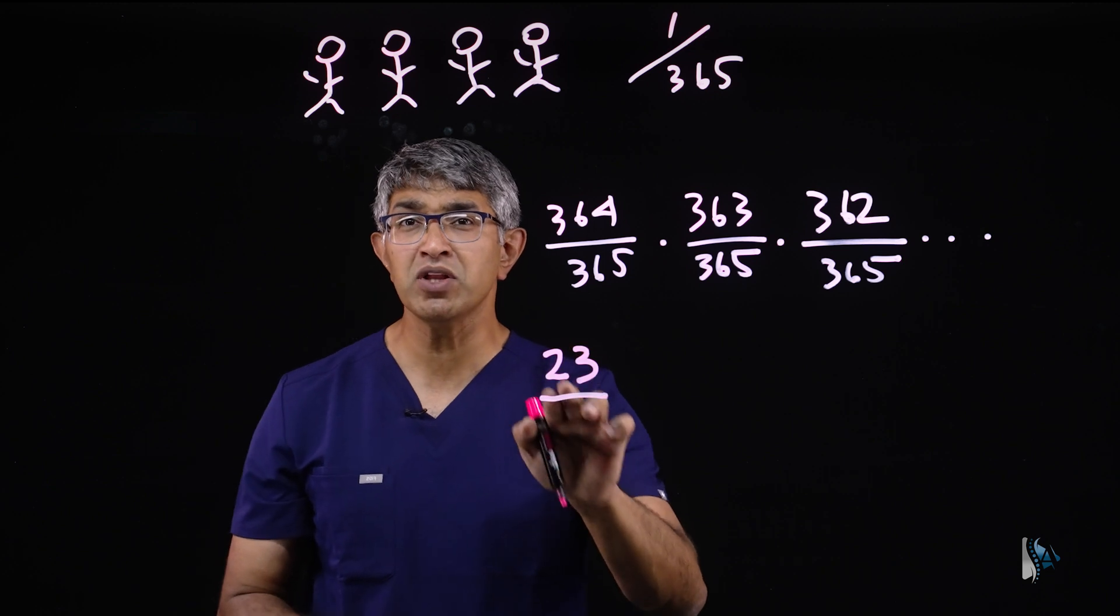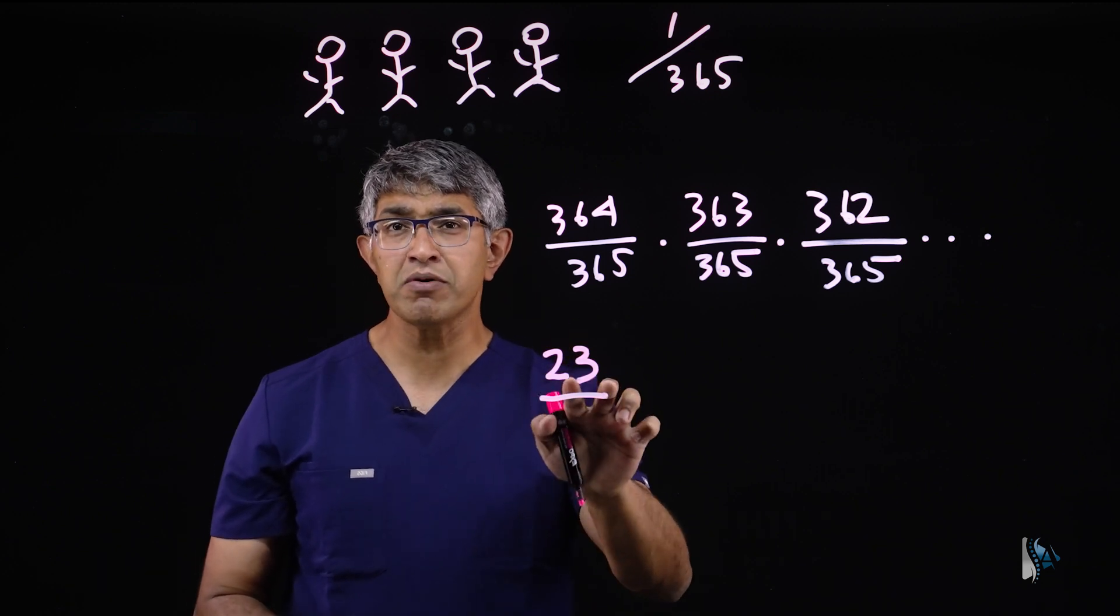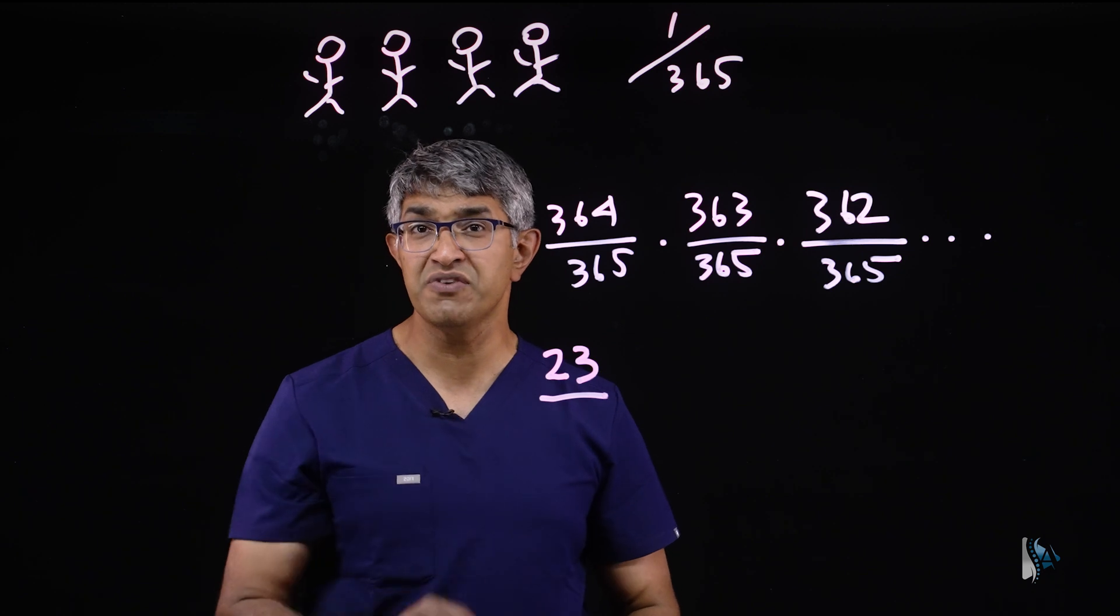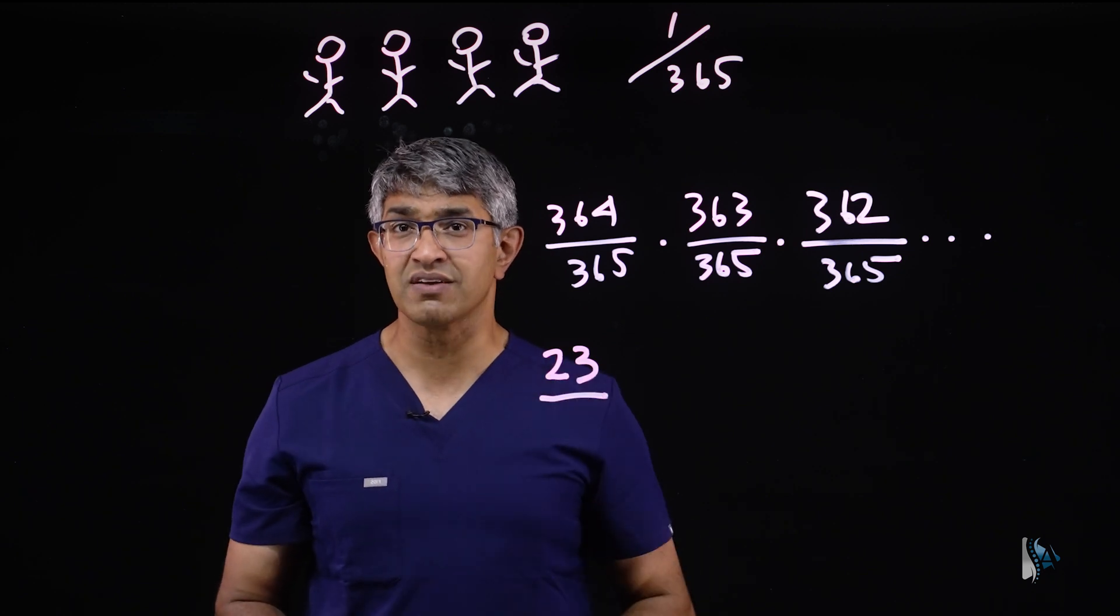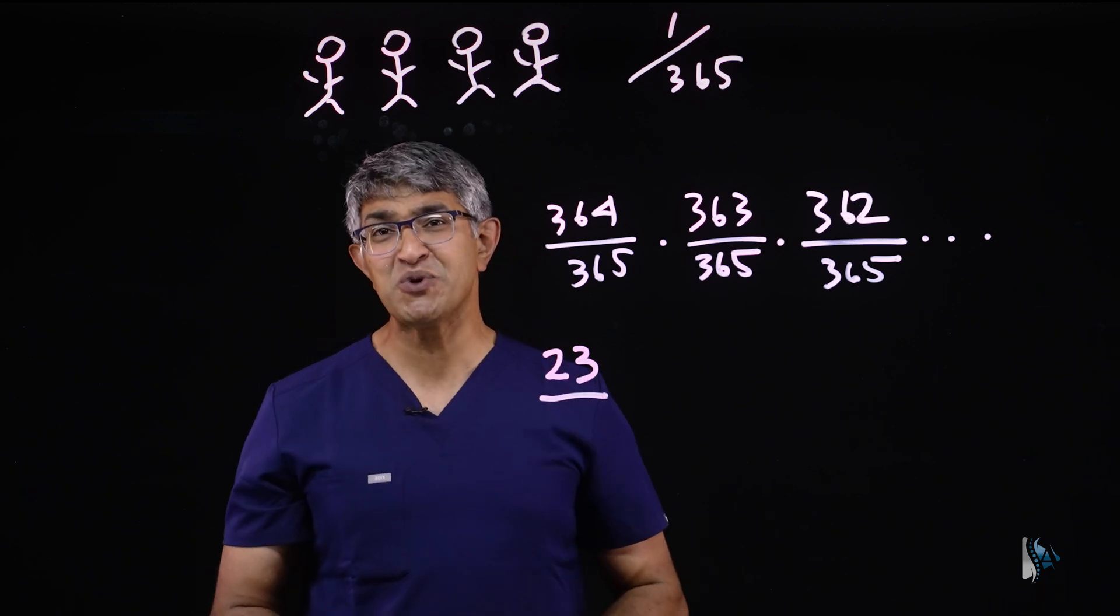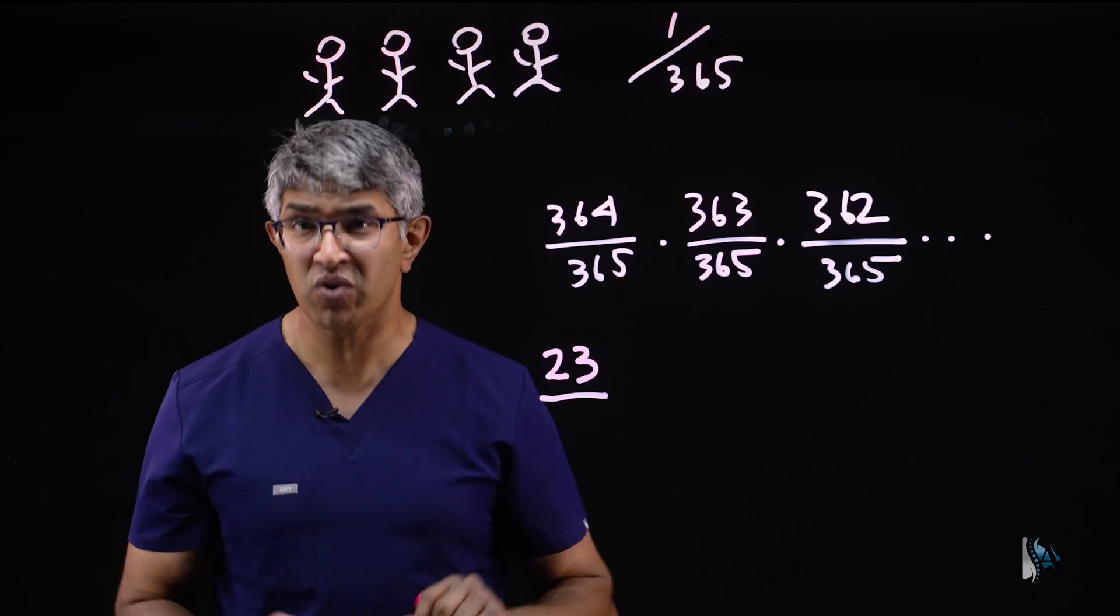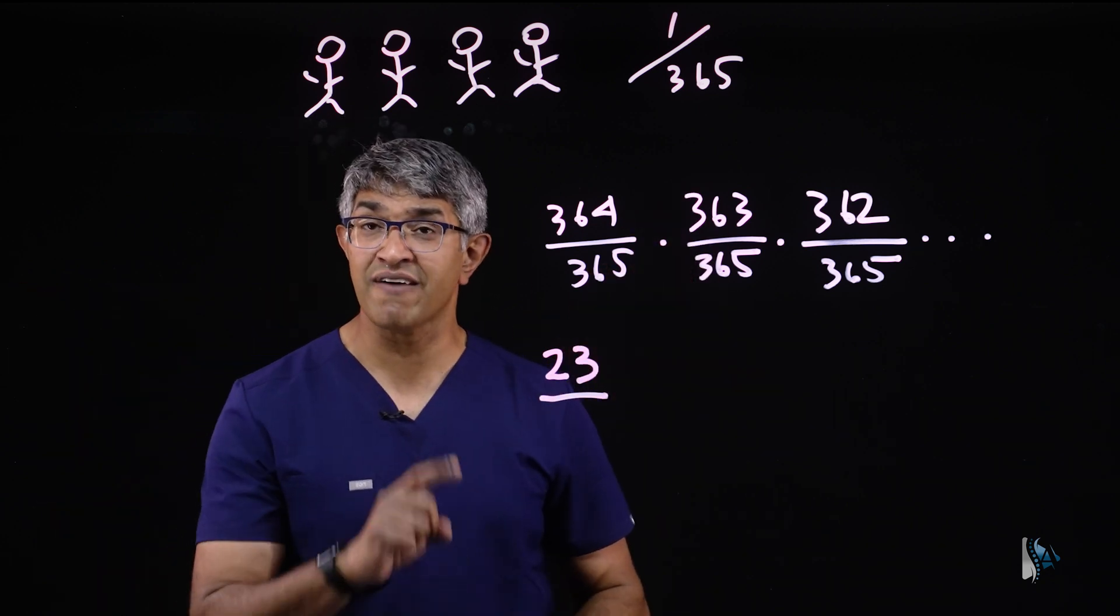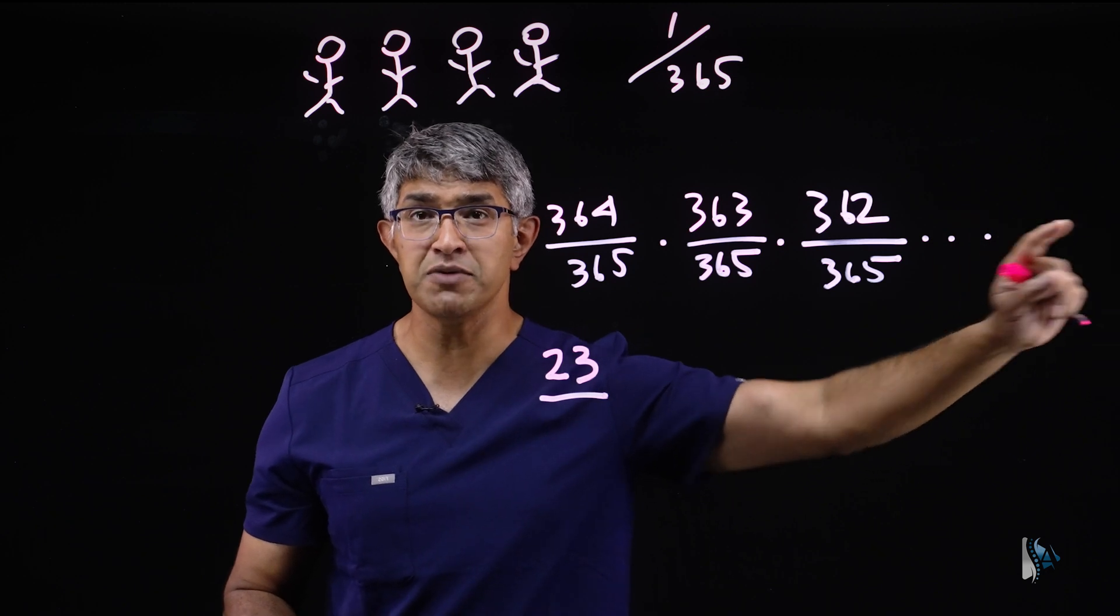You have 23 people in a room, and the probability that two of them shared the same birthday is 50%. That's surprising. It's surprisingly low. Most people, when you ask them that question, they think 160, whatever, to kind of split the 365. But it shows you the power of compounding dependence.